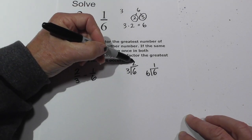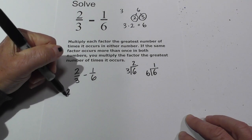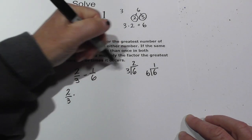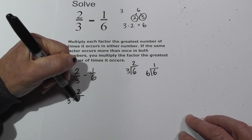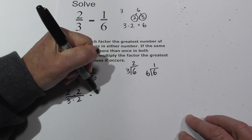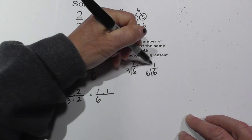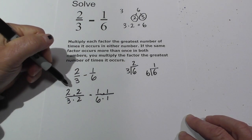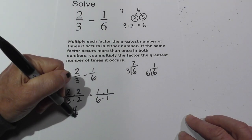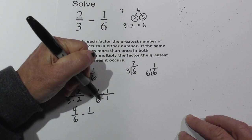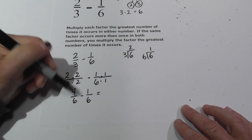Now I multiply this number by the fraction it was used for. I'm going to write two over three, times two, because that's how many times three goes into six. So two times three minus one over six, one times one, and six times one. Now I'll multiply these out: two times two is four, three times two is six, minus one times one is one, six times one is six. Now I am ready to subtract because I have a common denominator for both fractions.